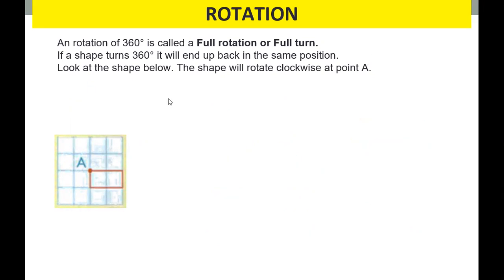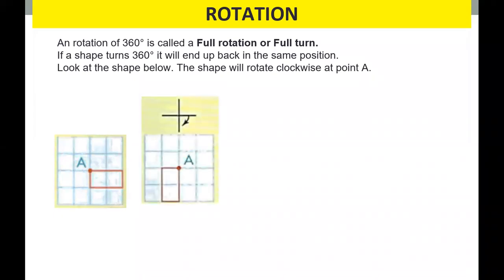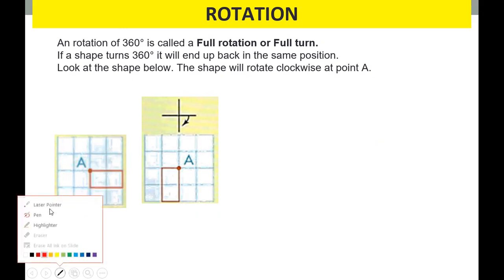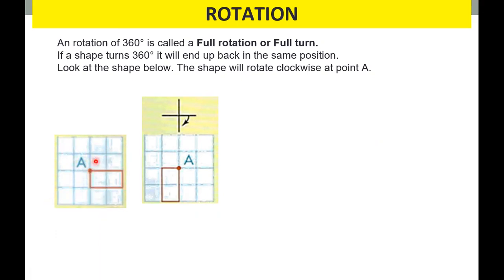Now let's do this. This is the original shape, and this point is the center of rotation. If we turn 360 degrees clockwise, we will rotate clockwise at point A, 360 degrees. So it starts here and it will go there — I will draw it so you can see.